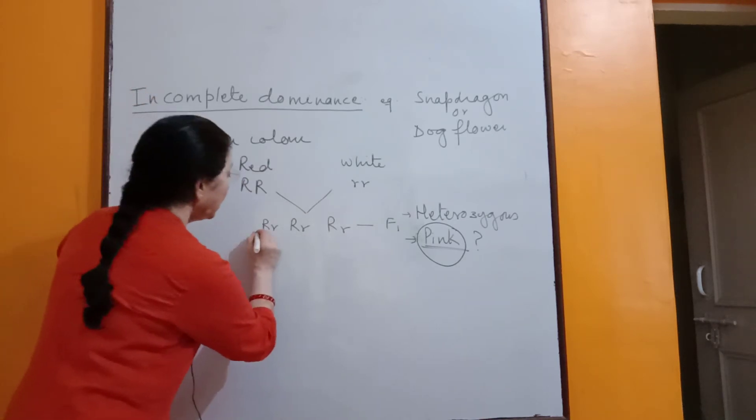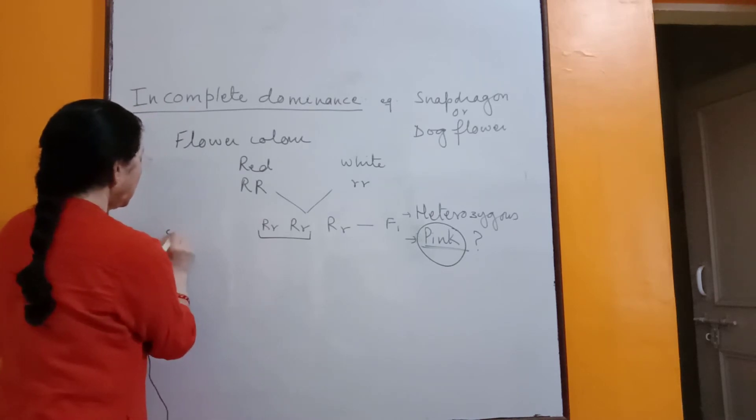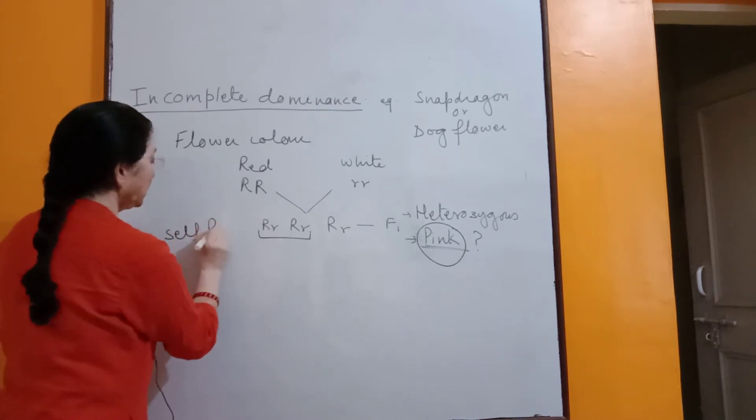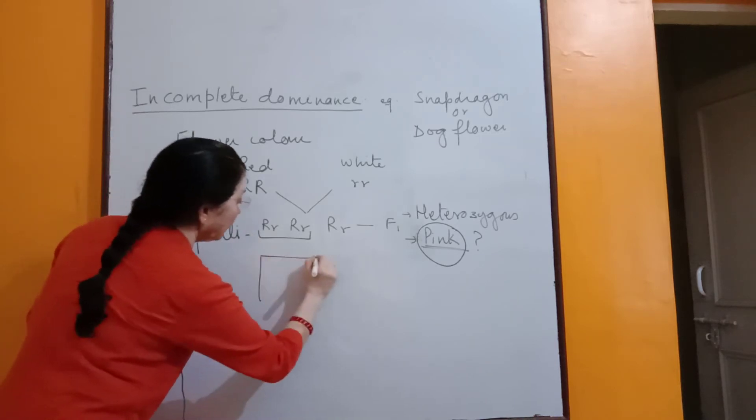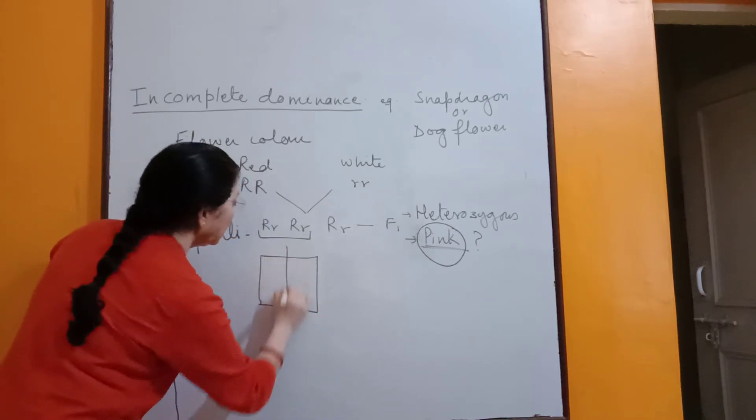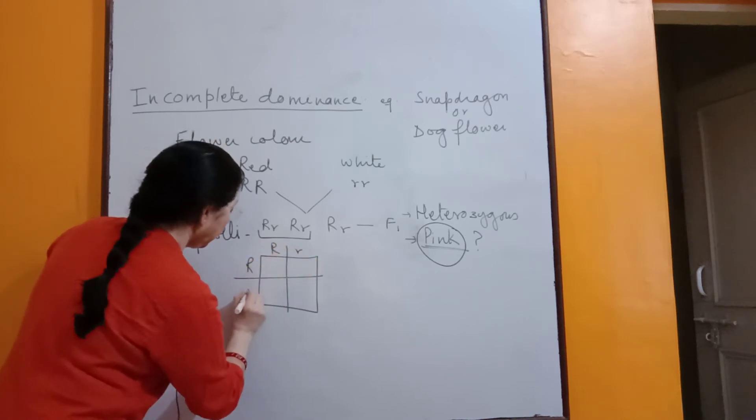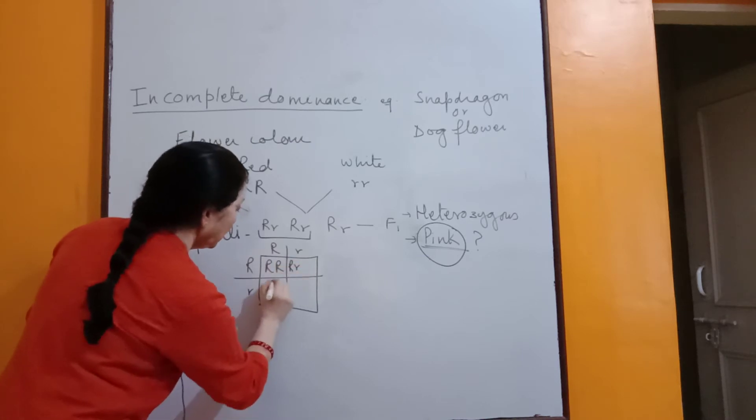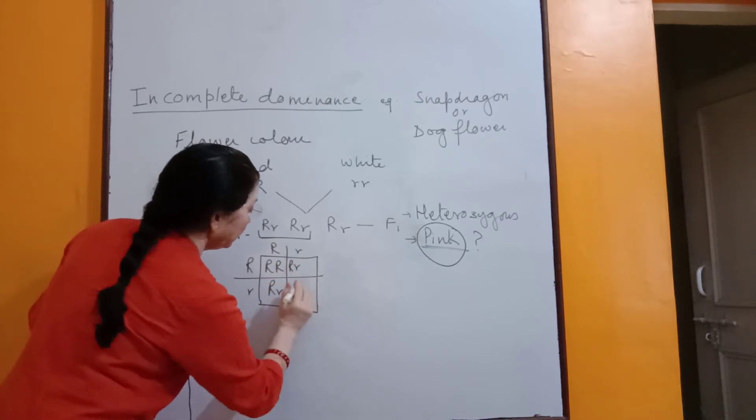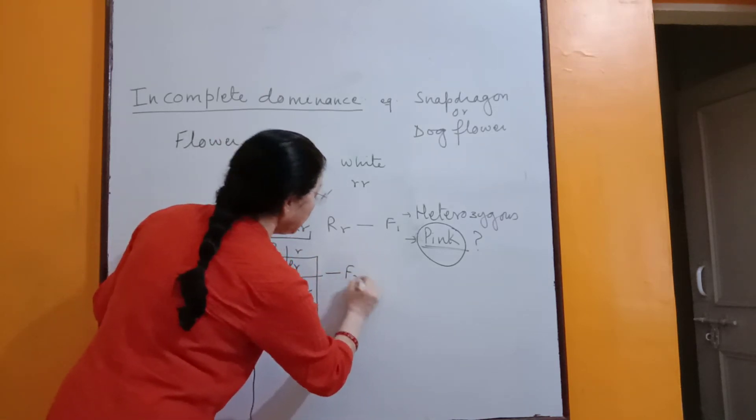But when these two were allowed to go for self-pollination, self-pollination in F2 generation, the plants obtained were, this is F2.